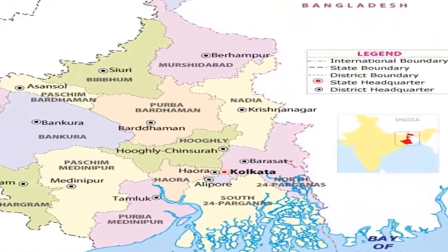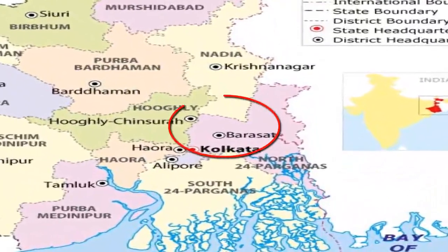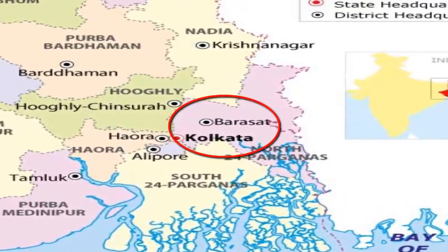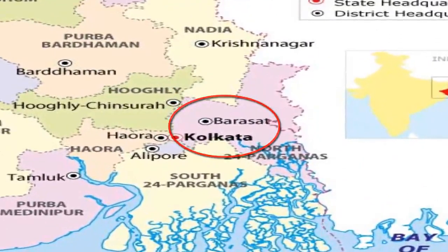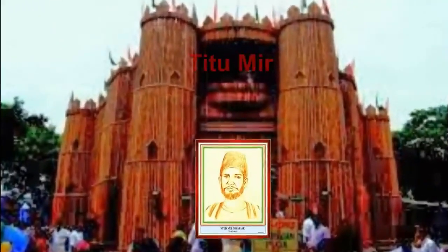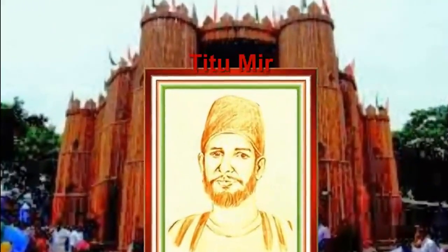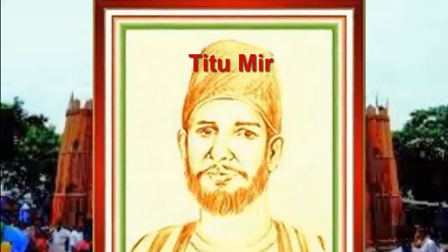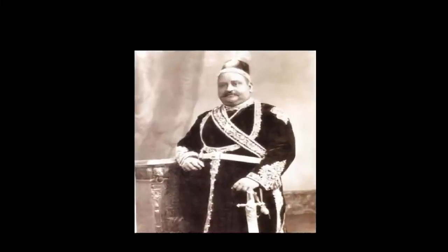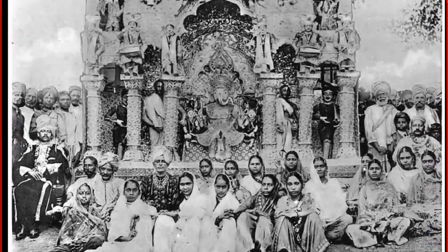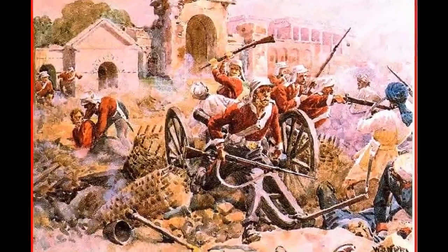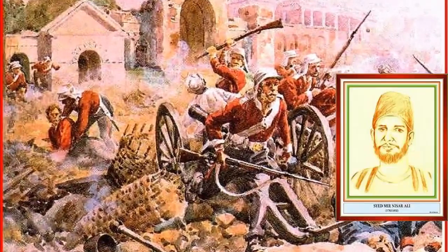The Wahhabi rebellion was an anti-imperial and anti-landlord movement. It originated around 1827 in the Barasat region of Bengal. It was led by an Islamic preacher, Titu Mir, who was deeply influenced by Wahhabi teachings. However, the fact that the majority of Zamindars were Hindus gave this movement an anti-Hindu complexion. Titu Mir, along with his 50 soldiers, was killed in the struggle.